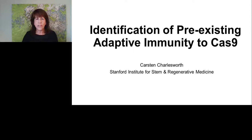Hello, everyone, and welcome to today's broadcast: Identification of Pre-existing Adaptive Immune Responses to Cas9 in Humans. It is presented by Karsten Charlesworth, who is a Ph.D. student in stem cell biology and regenerative medicine at Stanford University. I am Judy O'Rourke of LabRoots, and I'll be your moderator for today's event.